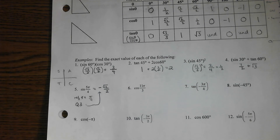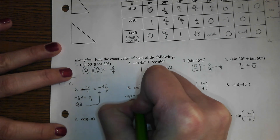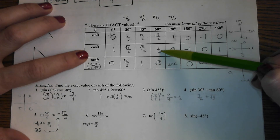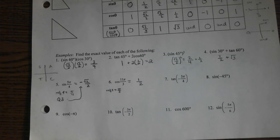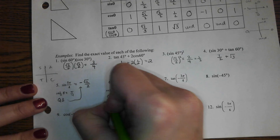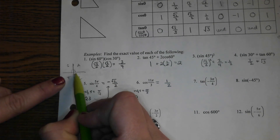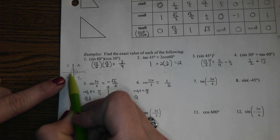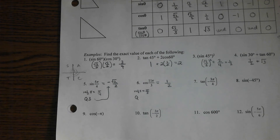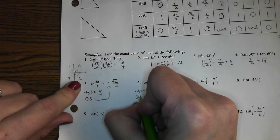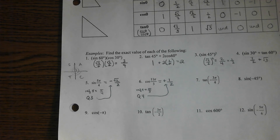For cos(11π/3): reference angle is π/3, and cos(π/3) = 1/2. For the quadrant: going around in thirds — 3π/3, 6π/3, 9π/3, 12π/3 is two full circles — so 11π/3 lands one tick before that, in the fourth quadrant. Cosine is positive in Q4, so the answer is positive 1/2. Your quadrant determines the sign; your reference angle determines the value.